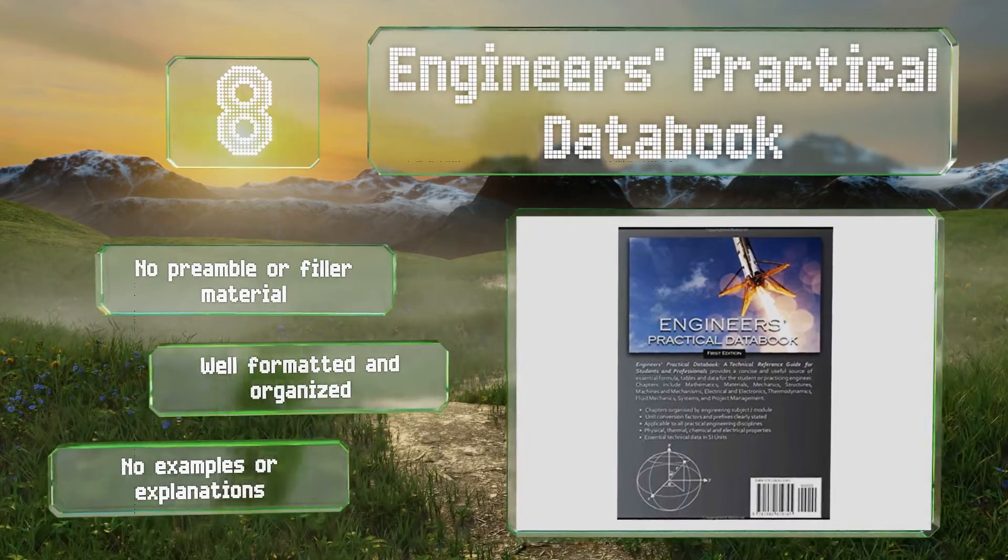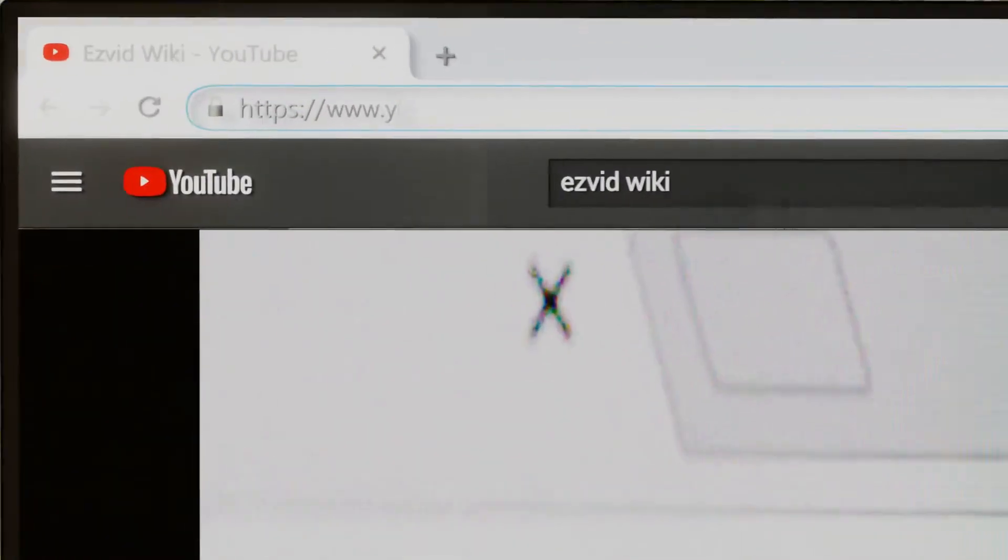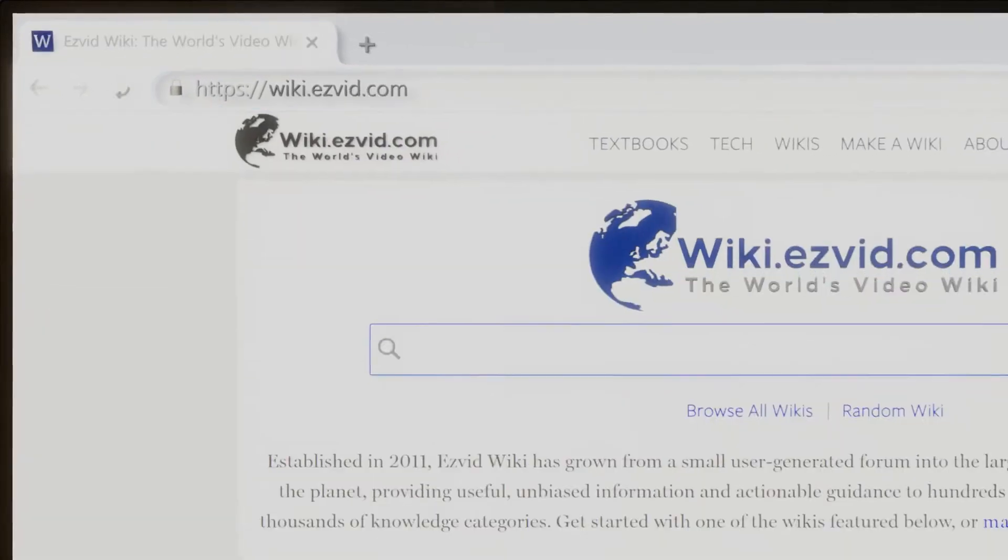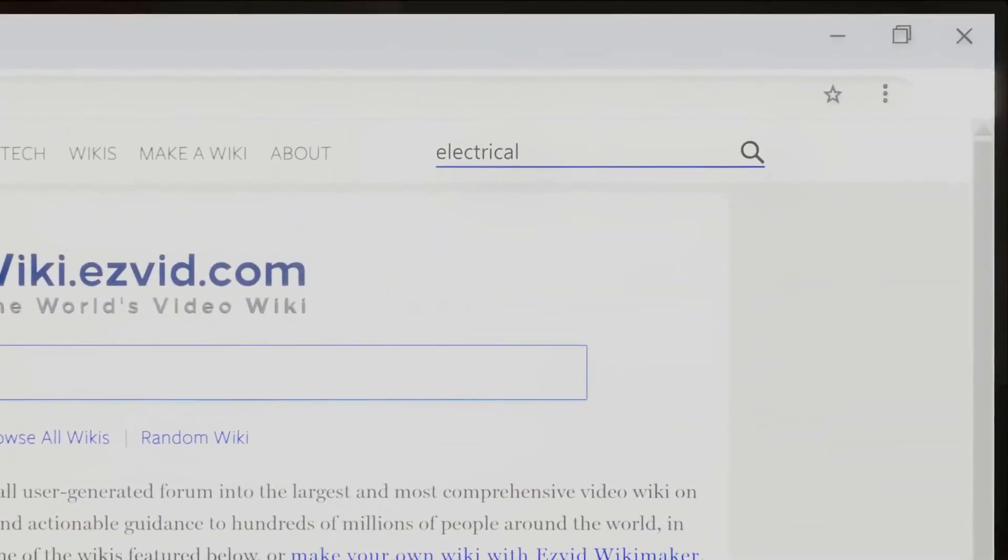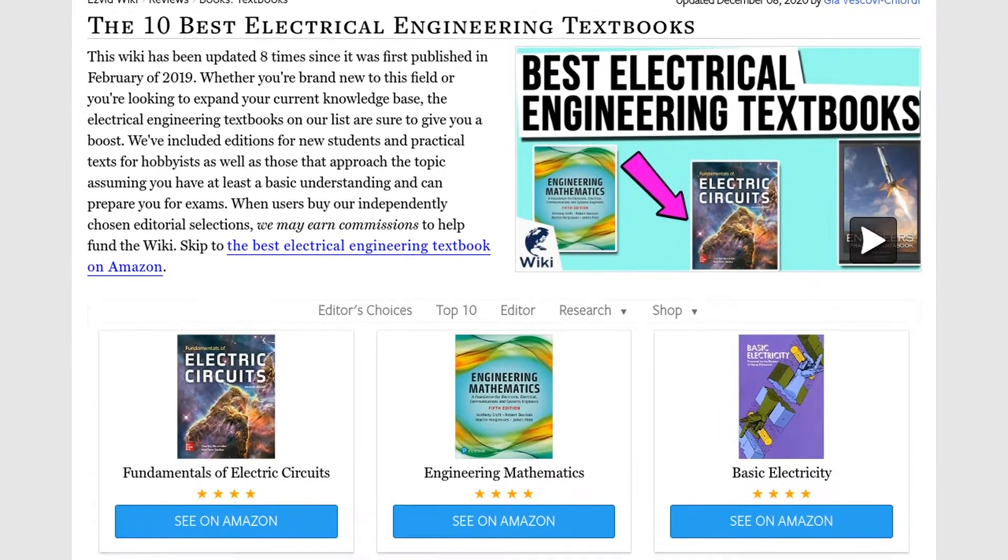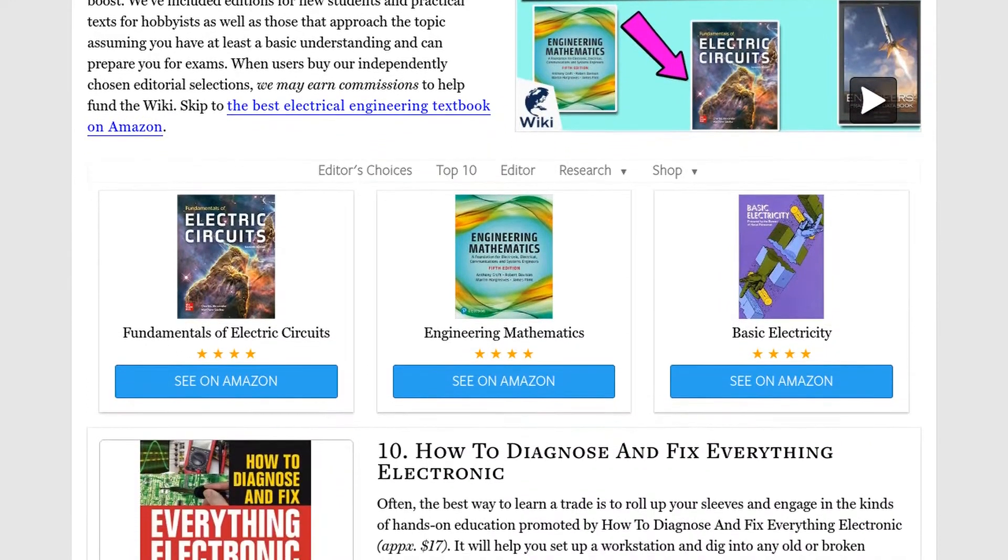Our newest choices can only be seen at wiki.easyvid.com. Go there now and search for electrical engineering textbooks or simply click beneath this video.